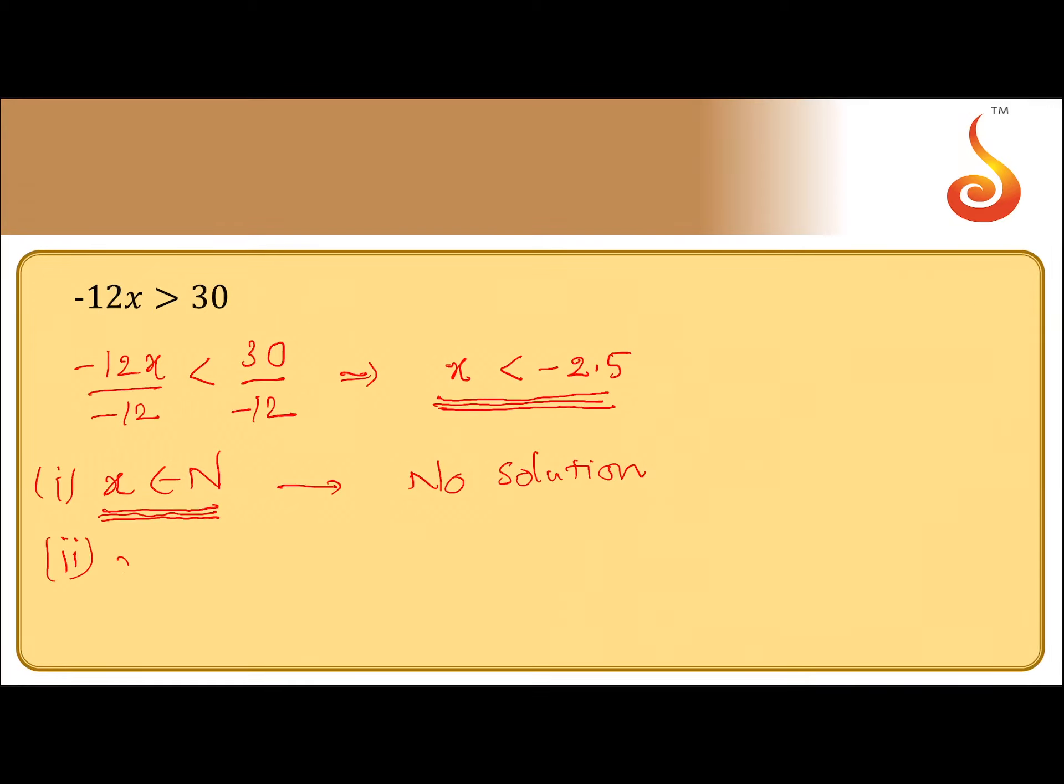But what happens when x is integer? When x is integer, the set of all integral values satisfying this inequality are infinite numbers of the form minus 3, minus 4, minus 5 and so on from minus infinity. This is the solution set of this inequality.